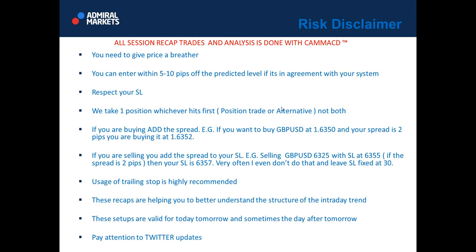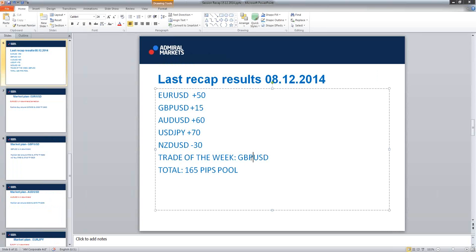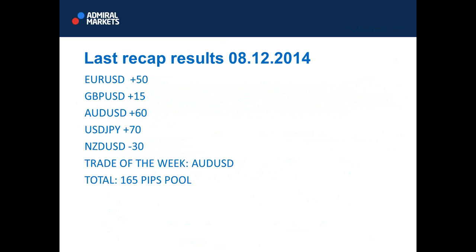Last week results — 8th of December 2014: EURUSD +50 pips, pound +15 pips, Aussie +60 pips, dollar-yen +70 pips in profit. The only losing trade was New Zealand dollar, which hit our stop loss at -30 pips before going in our direction. Total pips pool for the week: 165 pips. Trade of the week was definitely Aussie — it made more than 60 pips, and even continued past our target.